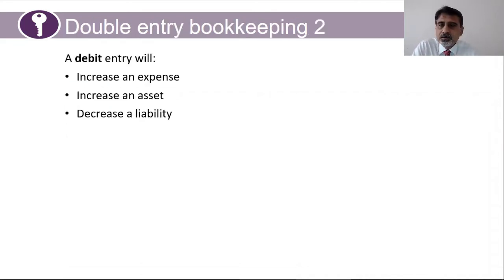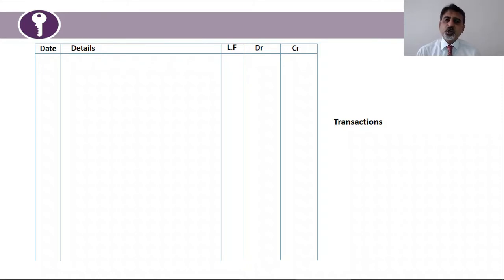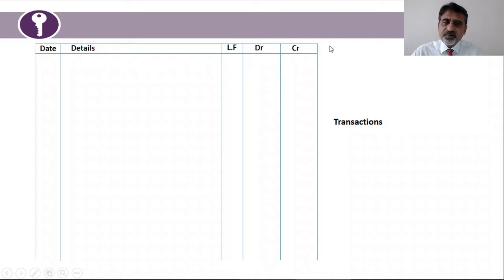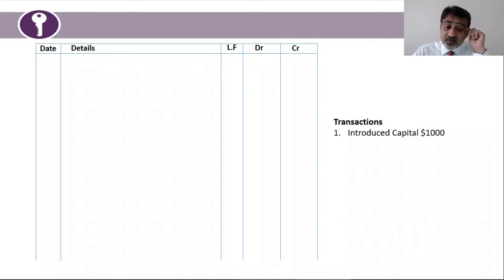A debit entry will increase an expense, increase an asset, or decrease a liability. Here is the journal format — your first accounting book. It has a column for the date of the transaction, a details column where you write which account you're debiting or crediting, an LF column for ledger folio (the ledger page number), and columns for debit and credit. There is no balance column in the journal. Now let's start with the first transaction: introduce capital of $1,000 in cash.